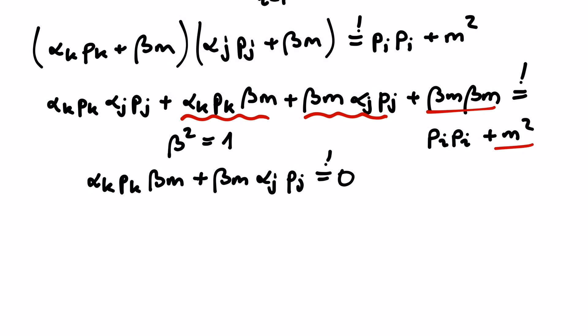If we rename some indices, changing j into k, we can pull out a pk to the right, and we arrive at this condition here. This means that the anticommutator of alpha k with beta has to vanish.